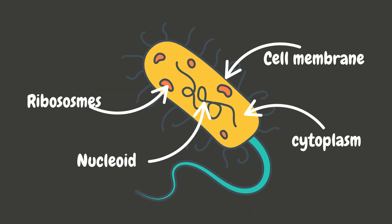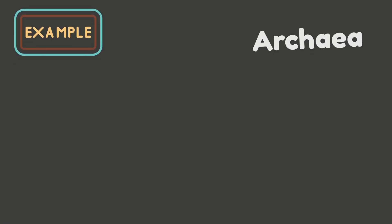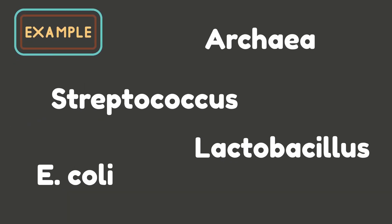Let's take a moment and look at the diagram. Some examples of prokaryotes are E. coli — this bacteria is found to live in your gut. Streptococcus — it's the sore throat germ. Lactobacillus — this bacteria helps make yogurt. And there's a cool group called archaea. They can live in wild places like boiling hot springs and super salty lakes.